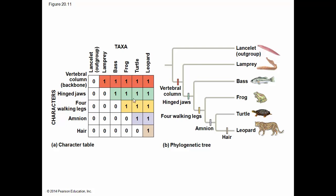We're able to piece together the evolutionary relationships of these organisms based on their characters. All these organisms have a backbone except for the lanceolate, the primitive chordate — it has a notochord but not a backbone. Everything else — lamprey, bass, frog, turtle, leopard — does. They either share or do not share certain traits: hinged jaws (lamprey does not have that), walking on four legs as tetrapods (the bass does not, but frog, turtle, and leopard do), amniotic sac (turtles and mammals have those), and hair, the final derived characteristic, shared only by the leopard. We use those derived characteristics to build the phylogenetic tree.